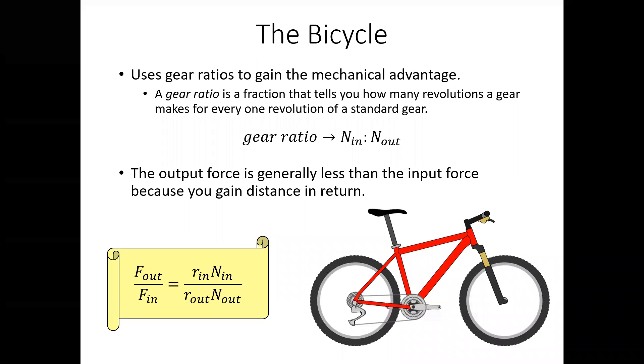Now, a bicycle is a little bit different in two ways. One, this is a little bit of a tougher concept. But the first thing I'll talk about is that a bicycle does the exact opposite of what most machines do. Remember I said that humans are weak, so we want to apply less force over a longer distance so that we can get more force over a shorter distance, such as a car jack. Now a bicycle is the opposite.